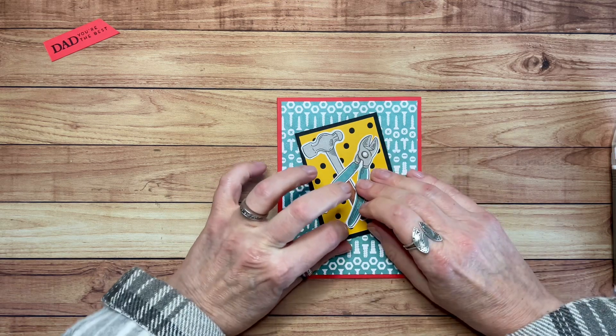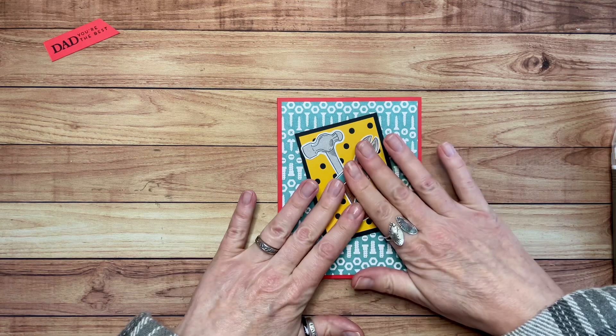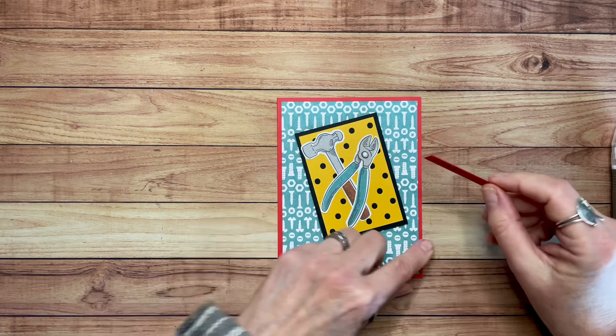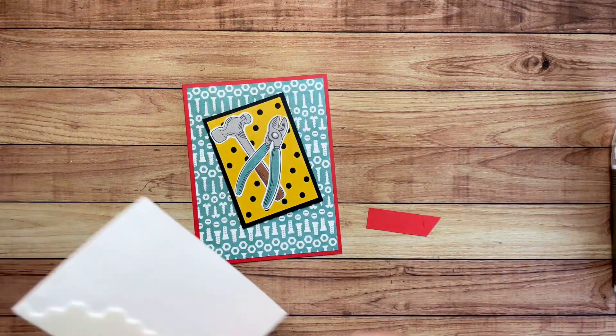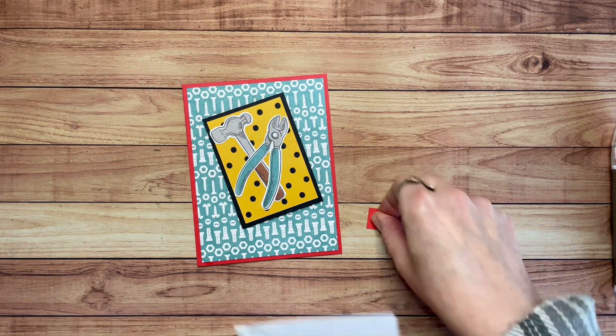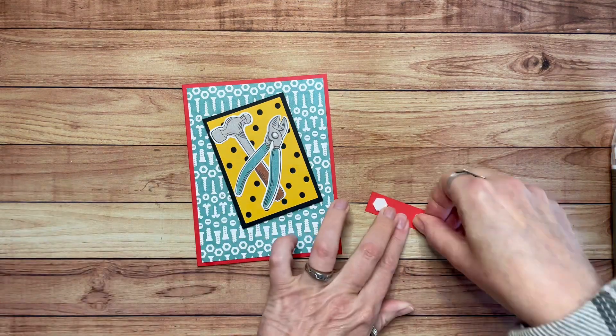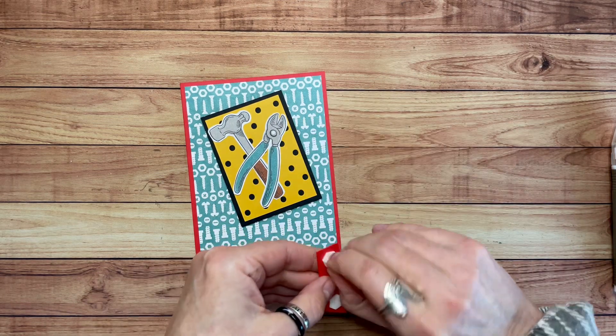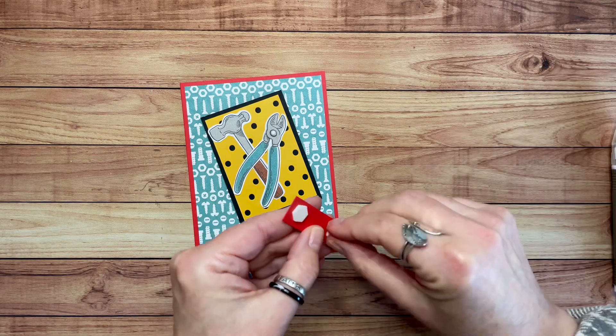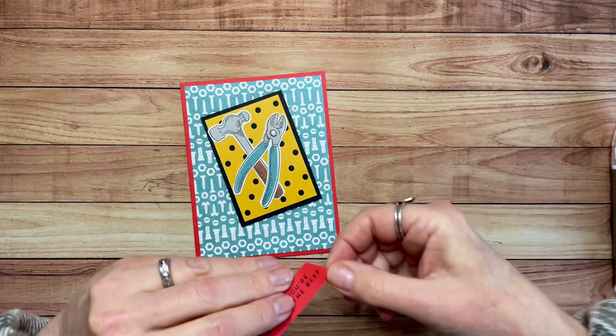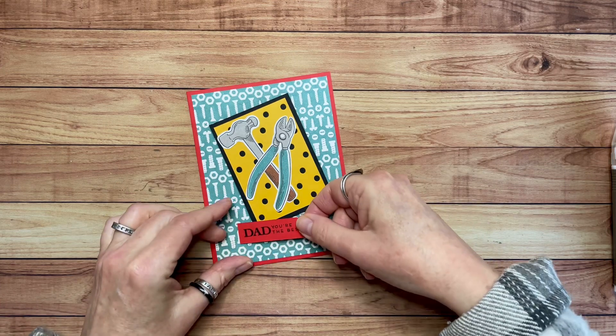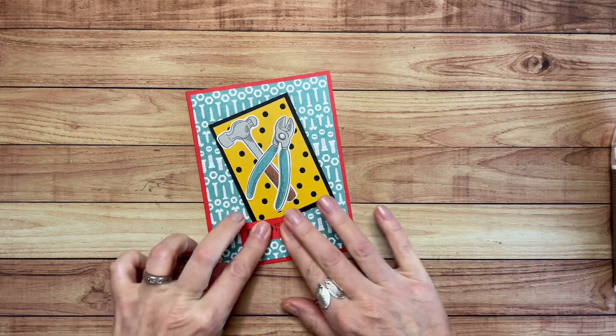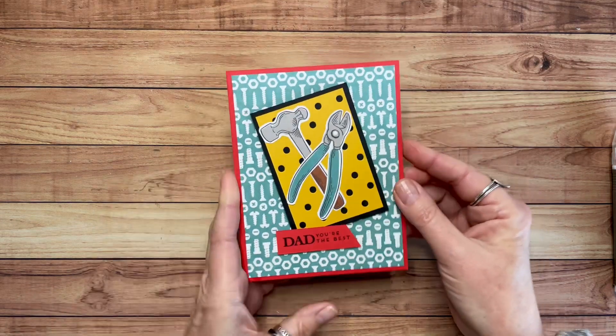Now if you want to talk about crafting tools, I know what those are. So this is going to go right down here at the bottom. I am just going to grab my dimensionals again. I'm going to put one at each end. That way they won't be on top of this piece that I have already popped up because I don't need a double pop-up. Okay, let's put this right here. And there you have it. Dad, you're the best.